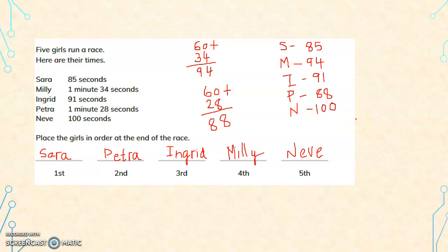To arrange in ascending order, first we have to convert everything into the same unit. Seconds and minutes and seconds, we have converted everything to seconds. So the person who has taken least amount of time is the winner. So it will be the smallest value - 85, then 88, then 91, 94, 100. So that gives the order: 1st, 2nd, 3rd, 4th and 5th. So if you are comparing, make sure that everything is in the same unit.